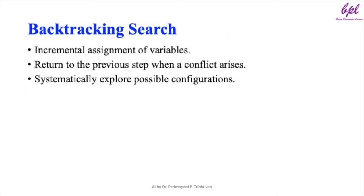Backtracking works by incrementally assigning values to variables, that is placing queens on the board. Whenever a conflict arises, such as two queens attacking each other, the algorithm backtracks to the previous step and tries a different assignment. By systematically exploring the possible configurations, backtracking search finds a valid solution without having to explore every combination.